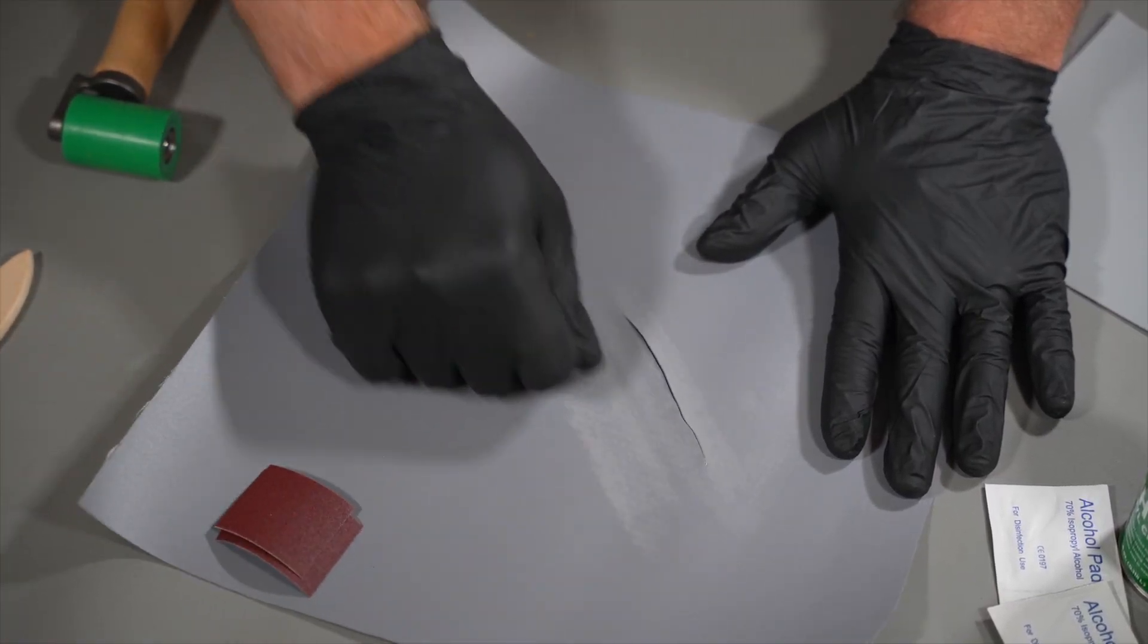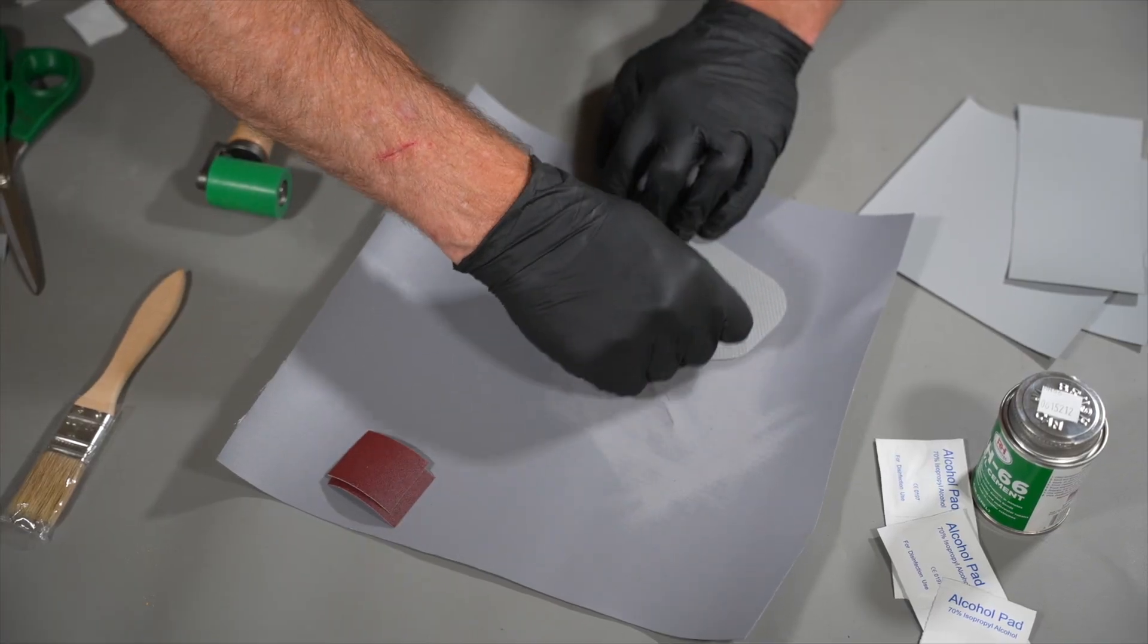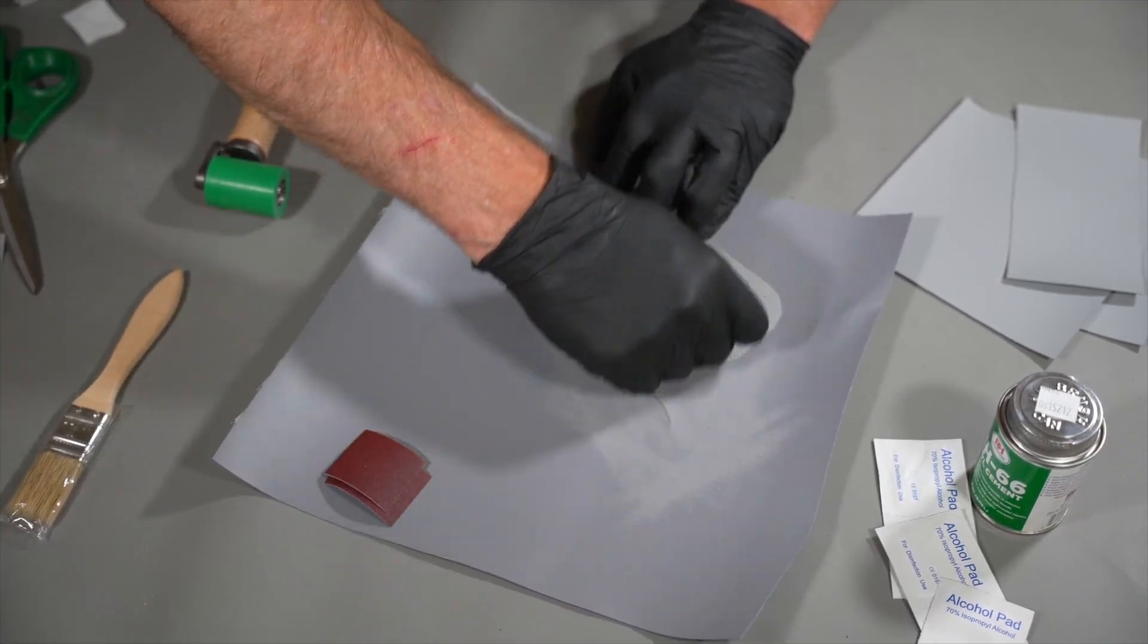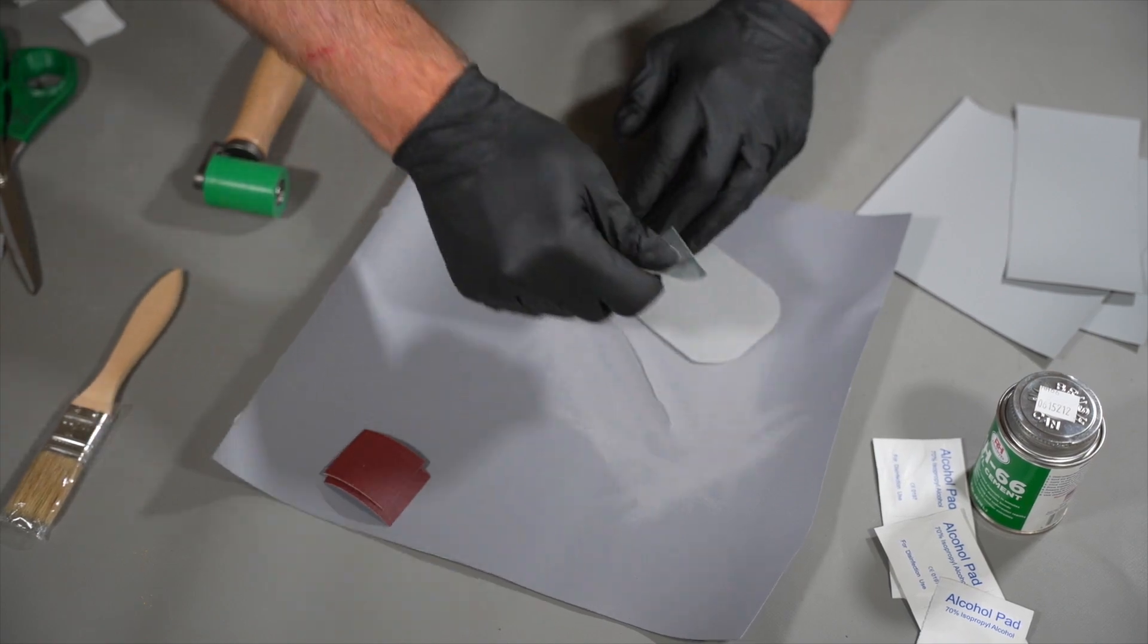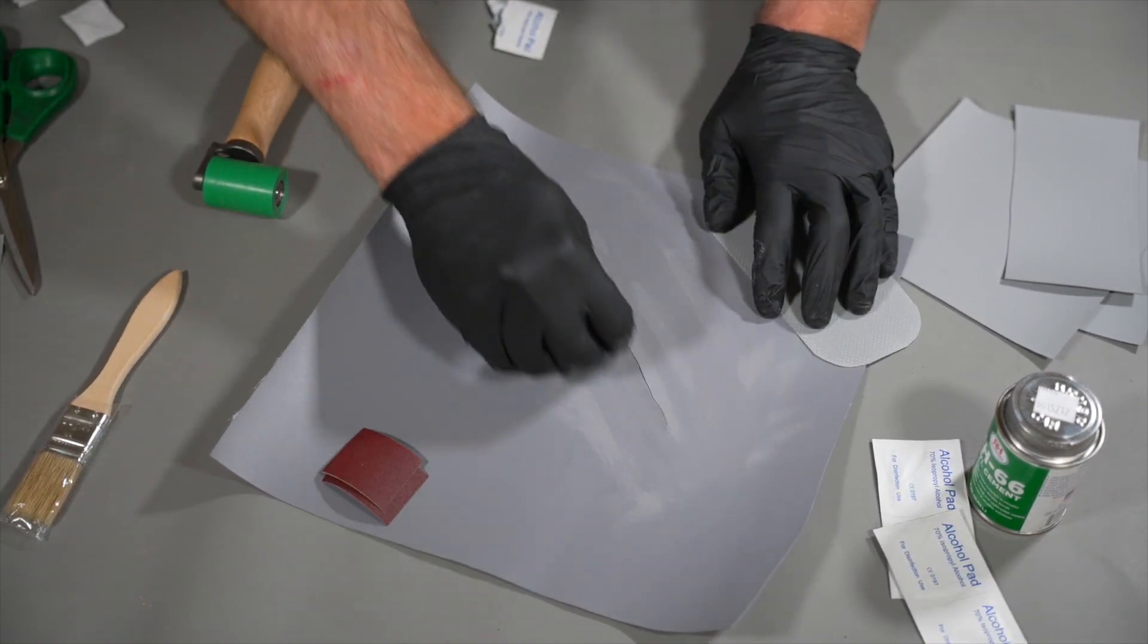Next, scuff the area on the bladder that will be patched and the smooth side of the patch itself with the sandpaper included in the kit. Once both surfaces have been scuffed, wipe the areas again with a fresh alcohol pad.